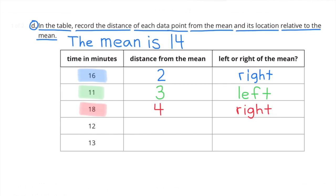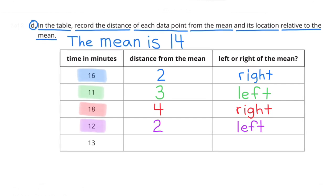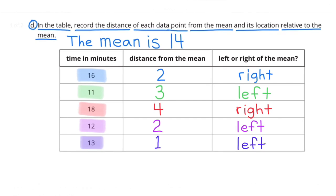When the time in minutes is 18, the distance from the mean is 4, and it's to the right of the mean. When the time in minutes is 12, the distance from the mean is 2, and it's to the left of the mean. When the time in minutes is 13, the distance from the mean is 1, and it's to the left of the mean.